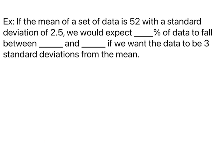Let's do one more. If the mean of a data set is 52 with a standard deviation of 2.5, we would expect what percentage of data to fall between what two values if we want the data to be three standard deviations from the mean. We're finding a couple different things here. First, let's go for the percentage. If we know we want three standard deviations from the mean, that means k is 3.